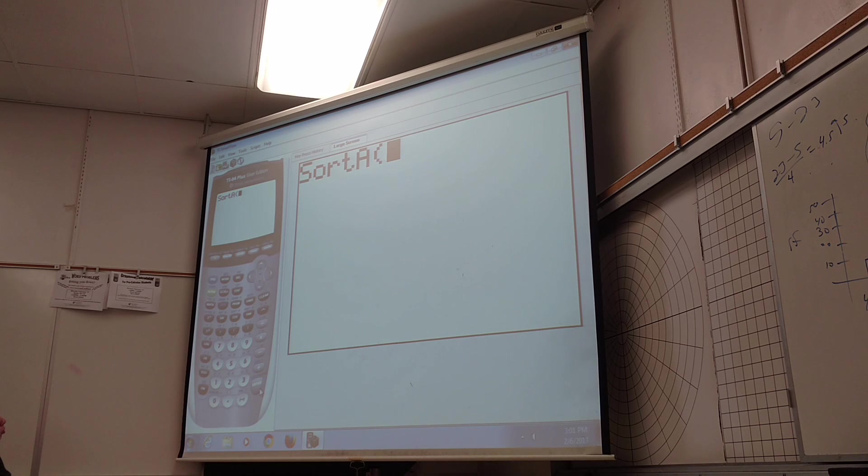Sort ascending, but you got to tell it which list. Because it's got a parenthesis here, right? So I want second. I had to hit the second button. One, because see how L1 is up there? Second one, so that's how you get L1. Sort L1. Enter.